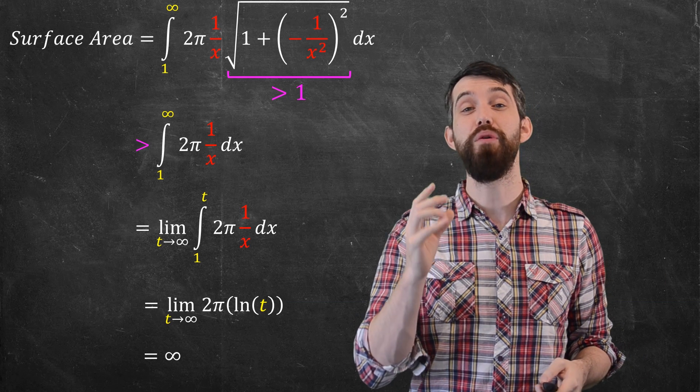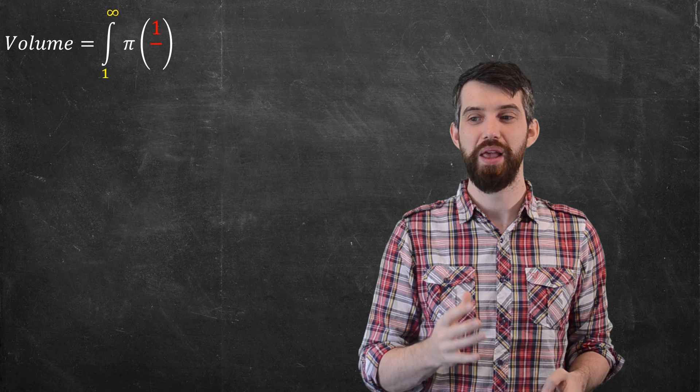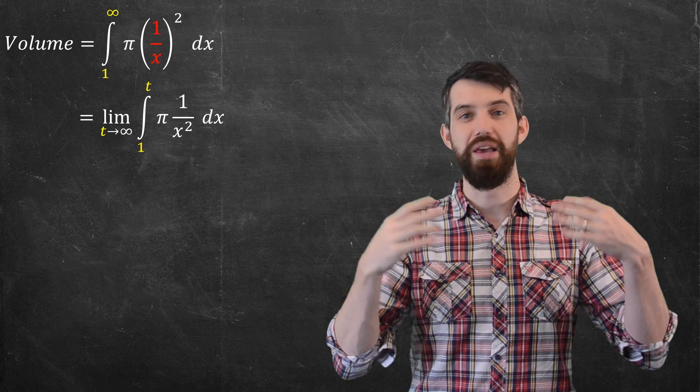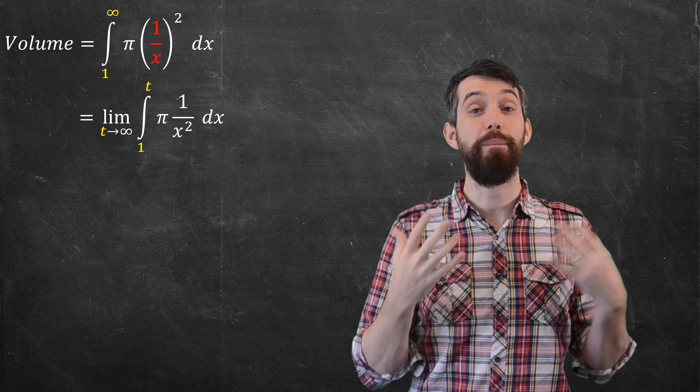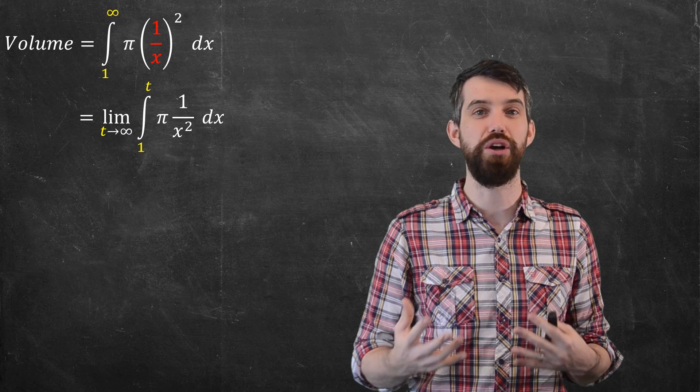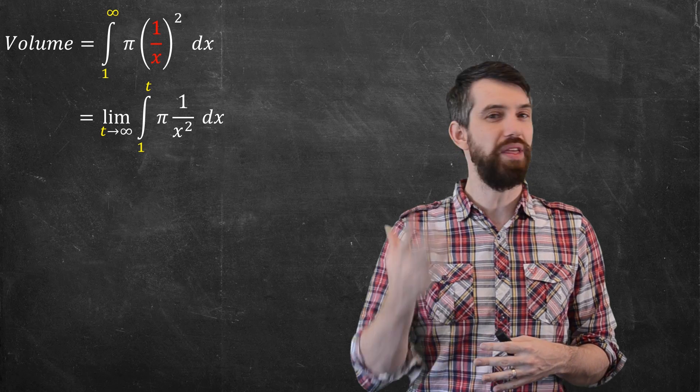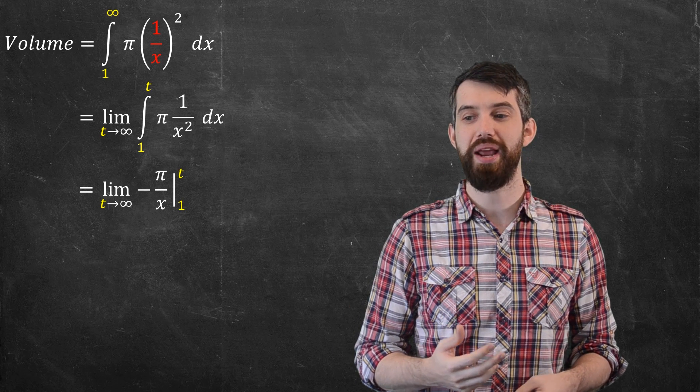Alright, wonderful. But what about the volume it contains? Well, the volume was given by this formula here. Now, again, this is an improper integral. So, by definition, this is the limit as t goes to infinity of 1 up to t of pi of 1 over x squared. And then this is just something I can go and integrate.